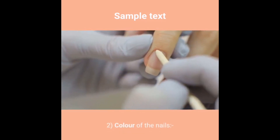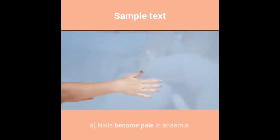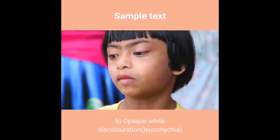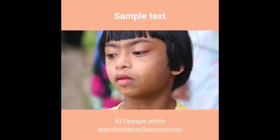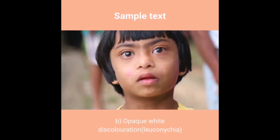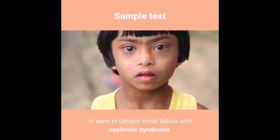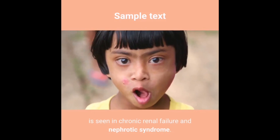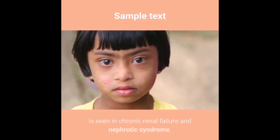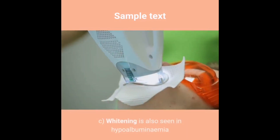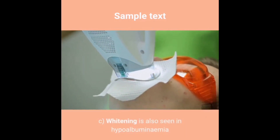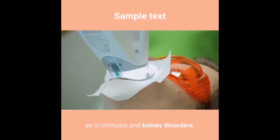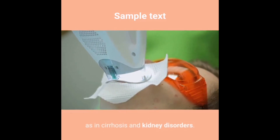Color of the nails: A) Nails become pale in anemia. B) Opaque white discoloration, leuconychia, is seen in chronic renal failure and nephrotic syndrome. C) Whitening is also seen in hypoalbuminemia as in cirrhosis and kidney disorders.